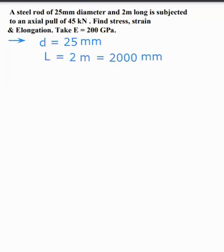Then next, subjected to axial pull of 45 kN. That is P is equal to 45 kN. Convert it in N, multiply by 1000. So 45,000 N.